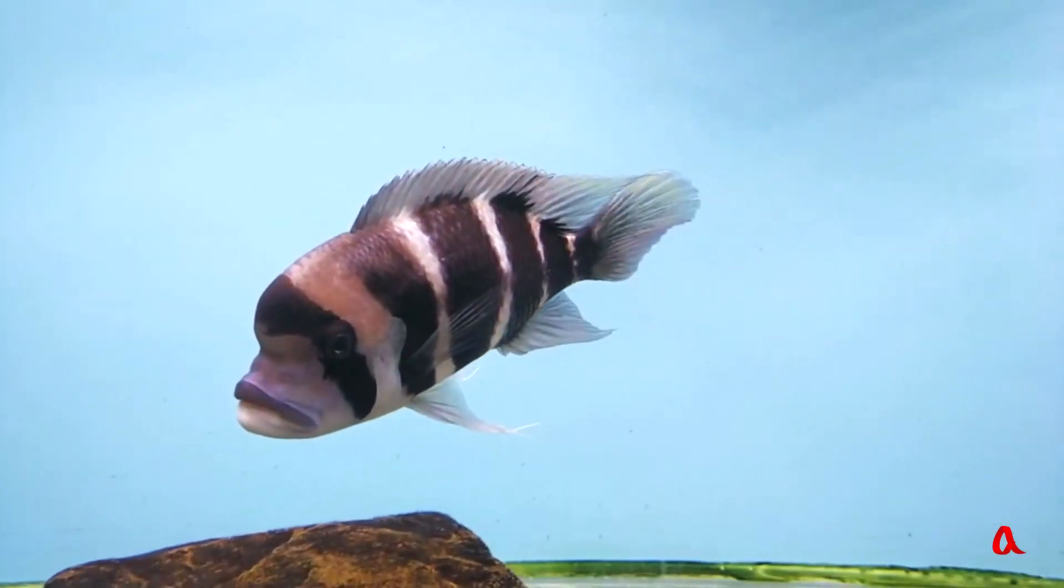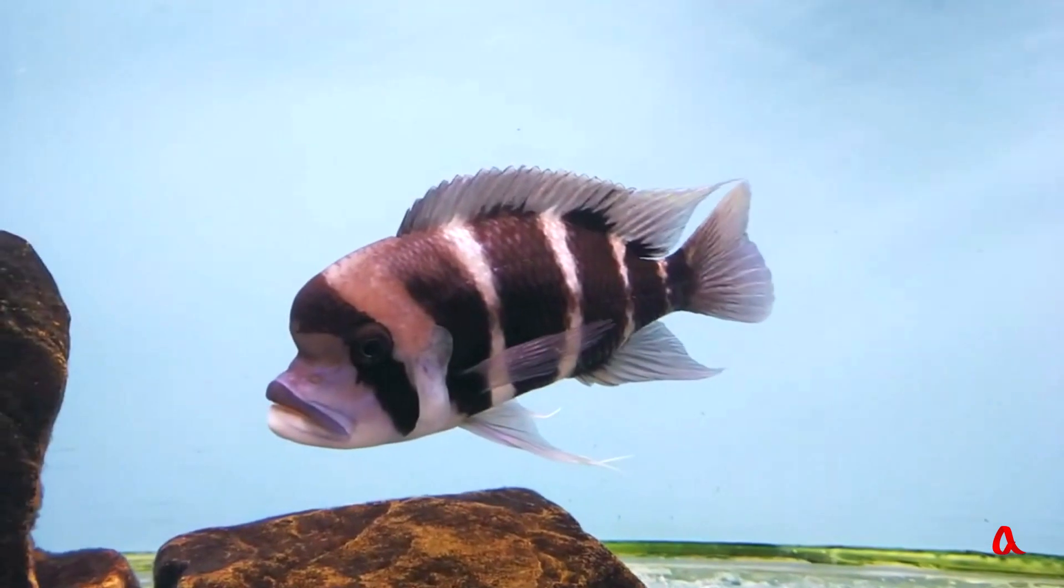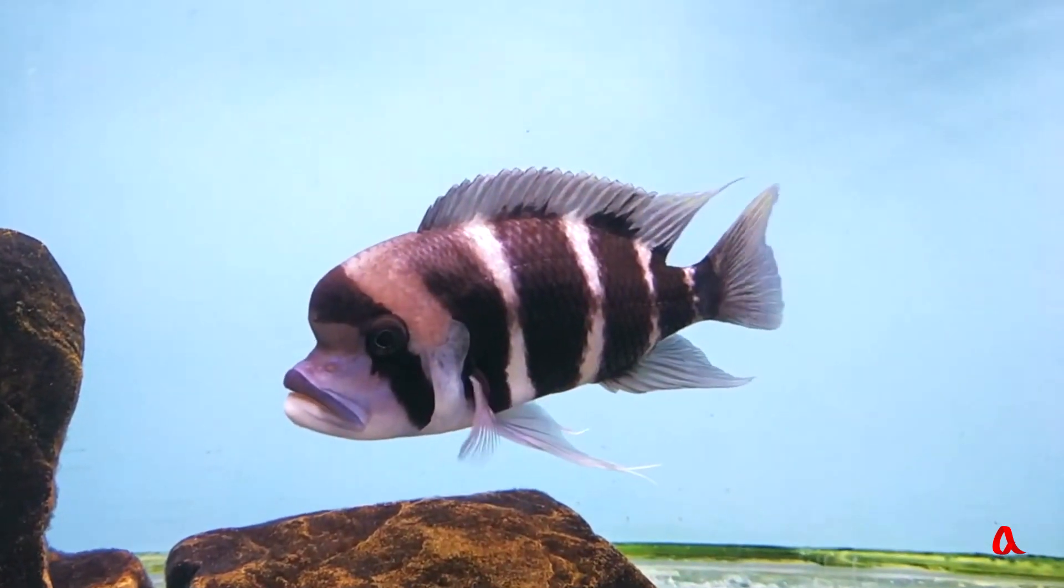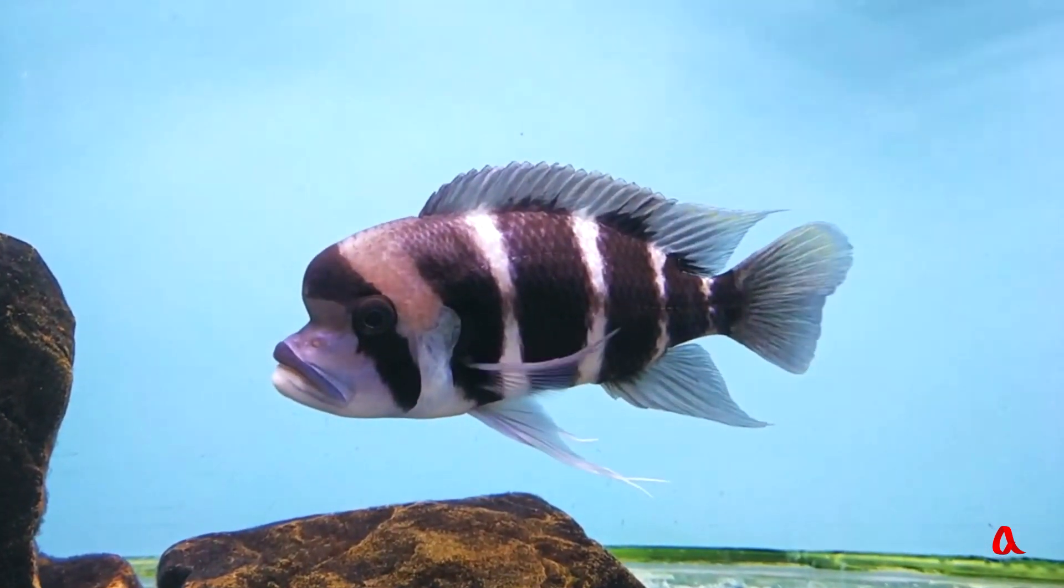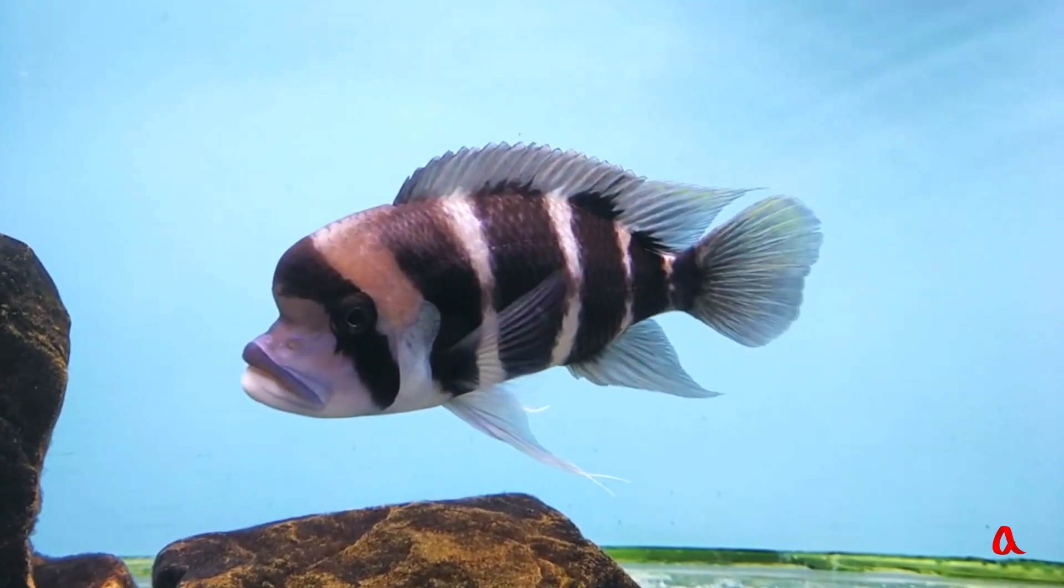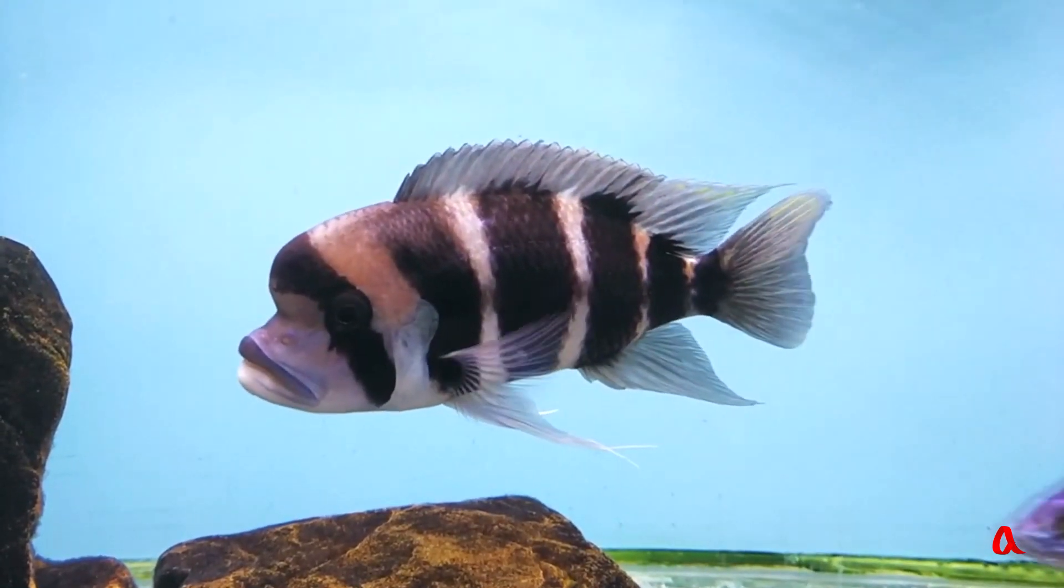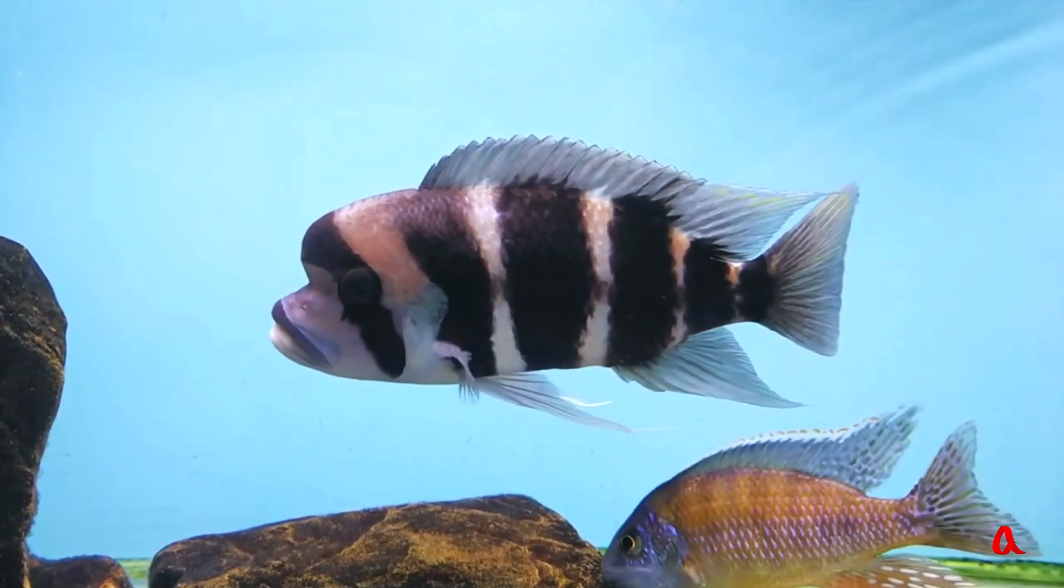Fish neither float up nor sink, but are suspended in water owing to the air bladder they possess, which is full of air. It compensates for the weight of the bones and other parts of body, which are denser than water.